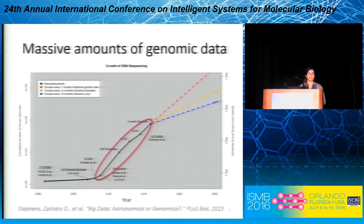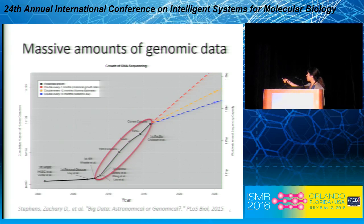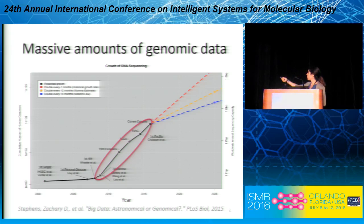Massive amounts of genomic data are being generated. To give you an example, if we continue at this rate of growth where data is doubling every seven months, we will have more than one zettabyte of genomic data by 2025. And even if we take a more moderate estimate, given by the most conservative projections, we will still get more than one zettabyte of data.